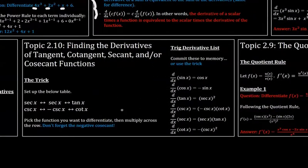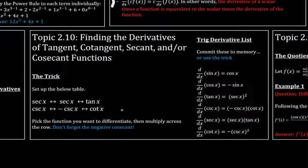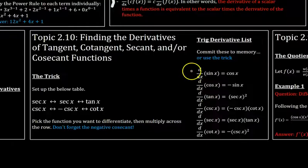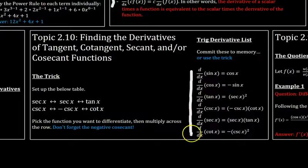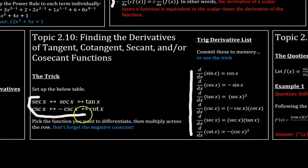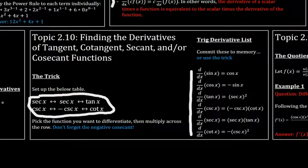The final topic is topic 2.10, which tells you how to differentiate all the other trig functions. Instead of memorizing all the derivatives, which are shown right here by the way, you can set up this diagram, and then use our special trick that we have. So what you do when you want to find the derivative of secant, tangent, cosecant, or cotangent, is you, so let's divide this diagram into three parts. There are the edges, and then the middle part.